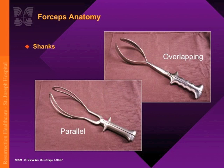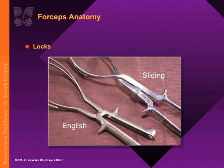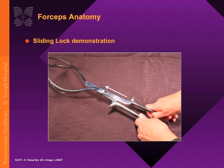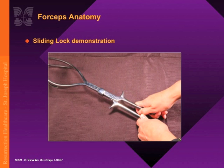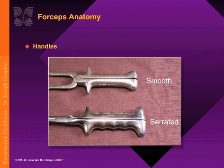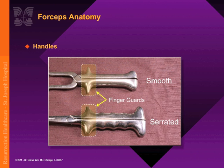The shanks could either be parallel or overlapping, and mainly determine the type of classic forceps instrument. There are only two types of locks currently used: the English lock and the sliding lock. All classic obstetric forceps have an English lock. The sliding lock is seen with Kielland forceps. The fourth part is the forceps handle, which could either be solid or serrated to enhance grip. The handles allow ease in applying the axis traction principle during traction.